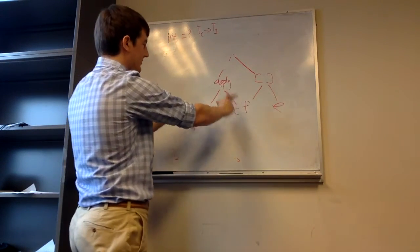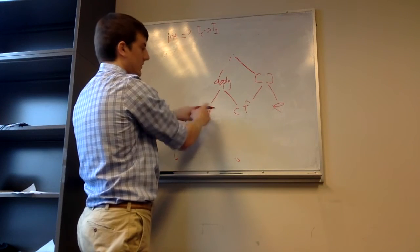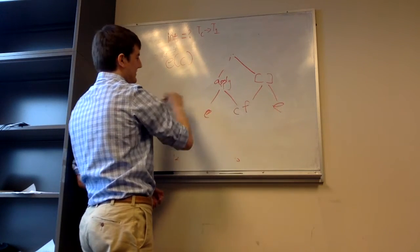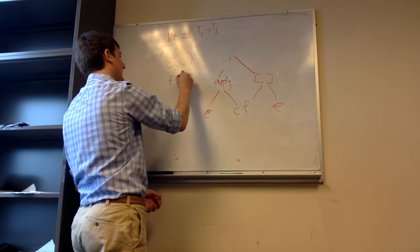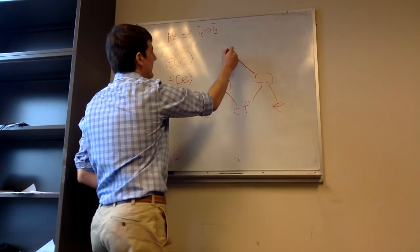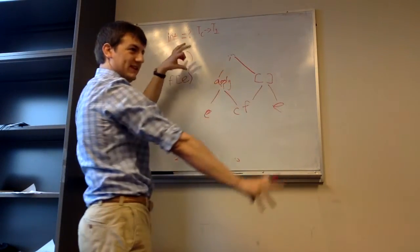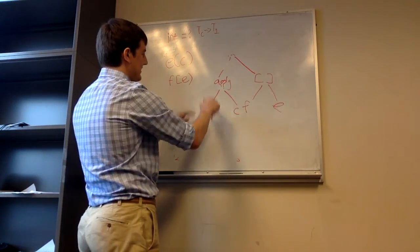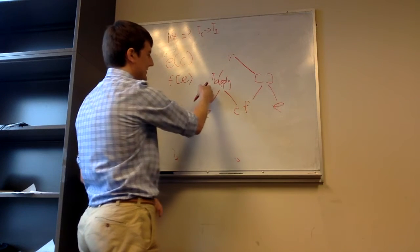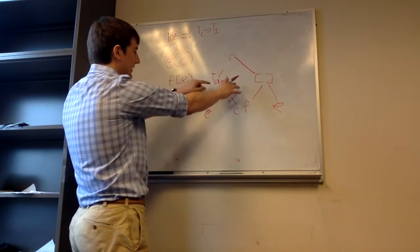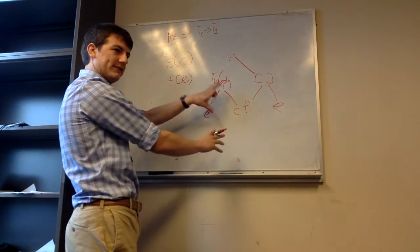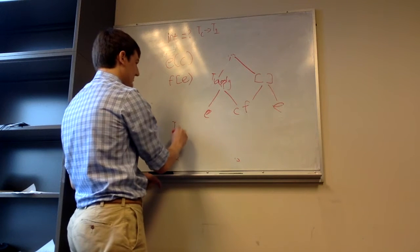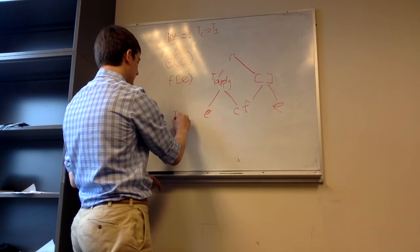Here we have function application — we're applying E. We have E as a function that's being called, so somewhere we have E of C like this. And then here we have something like F bracket E — so the dots here mean it doesn't matter where this other piece is, it could be anywhere. So let's give this a type T1. When we look at this apply, this apply has constraints — function calls have constraints. So what do we know about the types TE, TC, and T1 here?